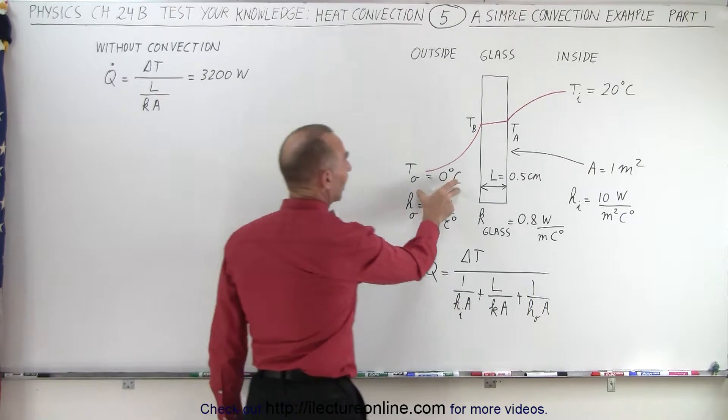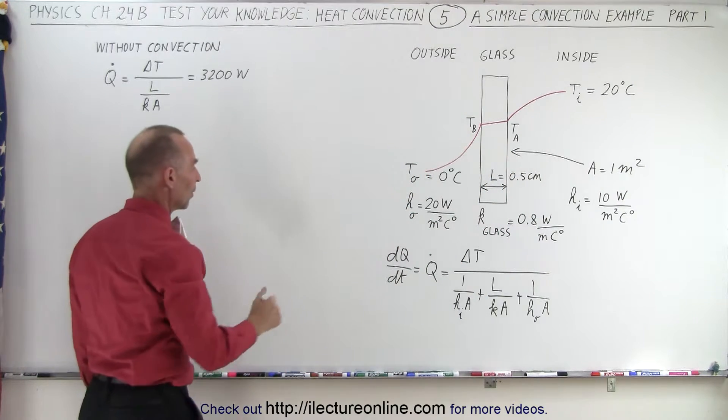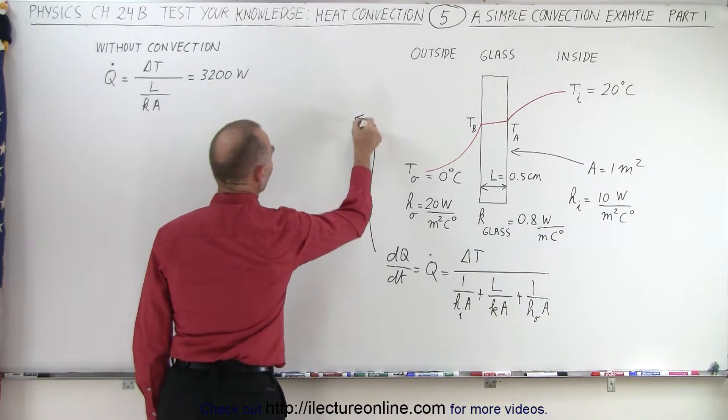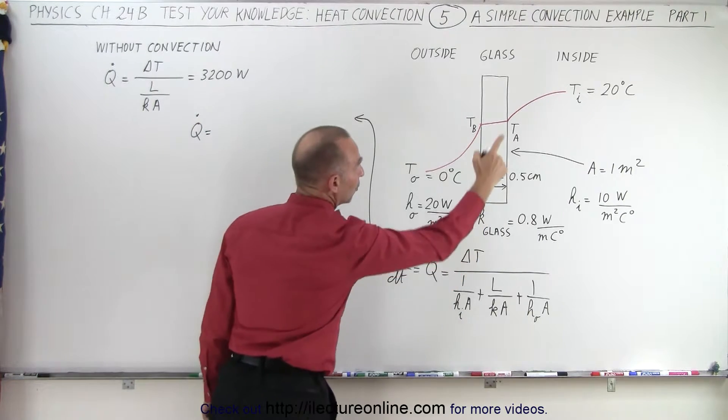So when we plug in the numbers, what do we get? We get Q dot is equal to the difference in the temperature between the outside and the inside, which is 20 centigrade degrees.